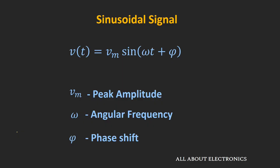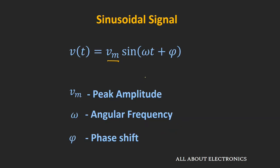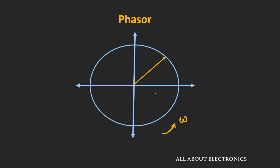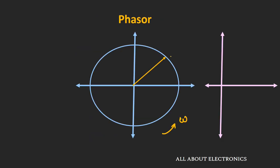Any sinusoidal signal in general form can be expressed as Vm·sin(ωt + φ), where Vm is the peak amplitude, ω represents the angular frequency, and φ represents the initial phase. A Phasor is a vector which rotates around its origin at a constant speed of ω radians per second in an anticlockwise direction. The length of this vector represents the maximum amplitude, and its angular velocity represents the angular frequency. Taking the projection of this rotating vector on the y-axis gives the instantaneous value of the sinusoidal signal.